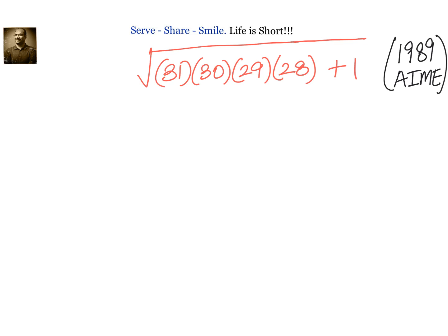You can solve this problem in more than one method. For the first method, let us use algebra. We will take 29 as x, then 28 becomes x minus 1, 30 becomes x plus 1, and 31 becomes x plus 2.